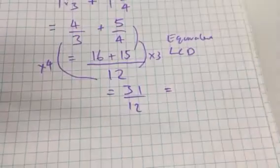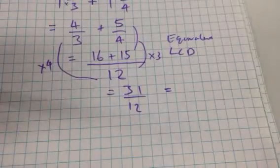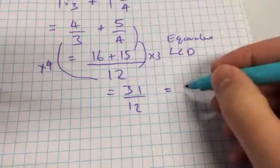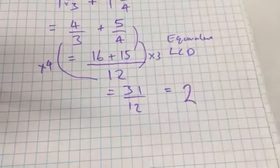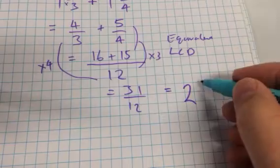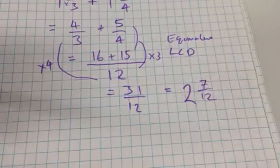Let's get it back into a mixed fraction. How many twelves are in thirty-one? Two. Two times twelve is twenty-four, so it leaves us seven. There we go.